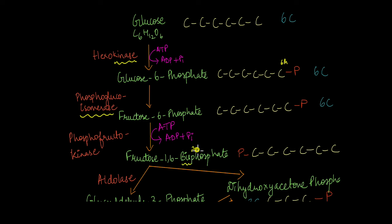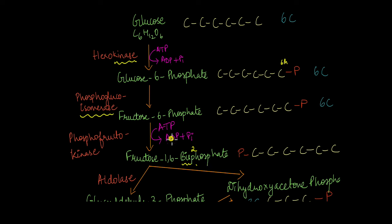The next step involves converting fructose-6-phosphate into fructose-1,6-bisphosphate — bis means two. The enzyme phosphofructokinase catalyzes this reaction. The additional phosphate group comes from ATP, which is hydrolyzed to give ADP and inorganic phosphate, and that inorganic phosphate is added to fructose-6-phosphate giving fructose-1,6-bisphosphate. These steps, where two molecules of ATP are used, make up the investment stage of glycolysis.